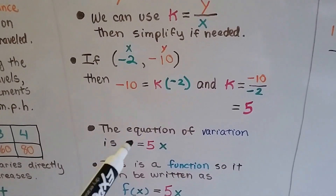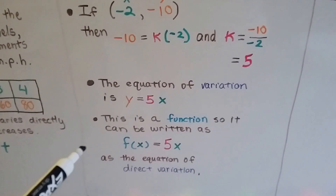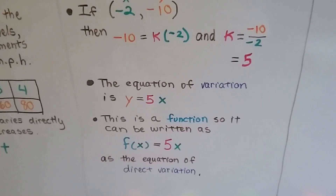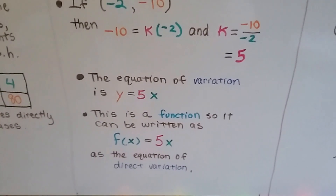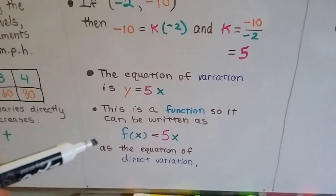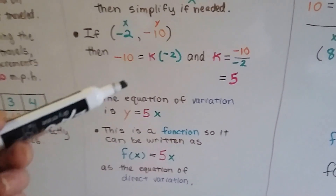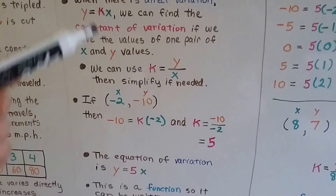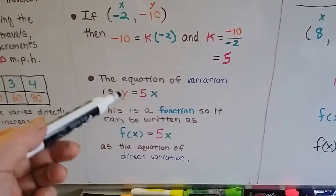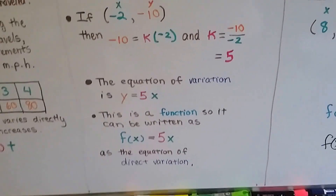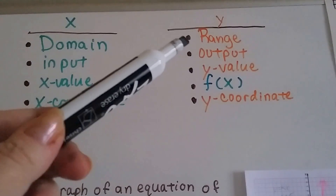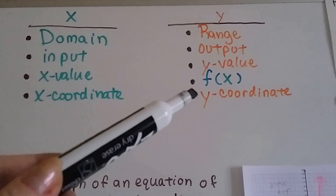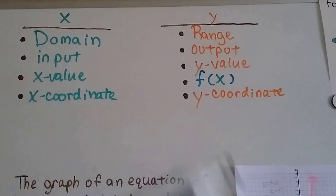The equation of variation ends up being y equals 5x. And because it's a function, it could be written as f(x) equals 5x as the equation of direct variation. Remember, x is the domain input value, and y is the same thing as the range output, or f(x). When you see f(x), you can think of y.